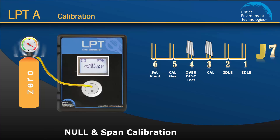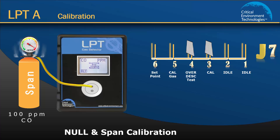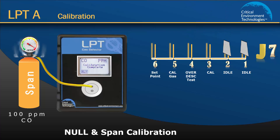When the message flow gas appears, attach the span gas cylinder and open the regulator valve fully to allow the span gas to flow over the sensor. When the gas flow is detected, the display will read waiting for stable reading. After the span is successfully completed, the display will show calibration complete. Return both jumpers to their idle position and the LPTA will return to normal operation.